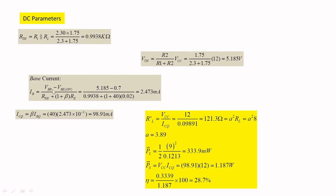I want to plug in those values. Vth and VBB both are equal. It is 5.185 minus 0.7 divided by 0.9938 plus (1 + 40) times 20. So, you will be getting 2.43 milliamps. Now, you want to find ICQ. ICQ is nothing but β times IB. That is, 40 times your base current, you will be getting 19.91 milliamps.